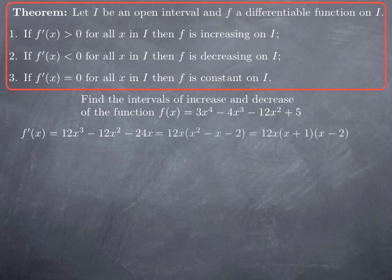In this case, we can factor out 12x, giving 12x(x² − x − 2). Since x² − x − 2 = 0 at x = 2, we can factor further as 12x(x − 2)(x + 1). Now we want to find the sign of this product, which depends only on the sign of each individual factor.